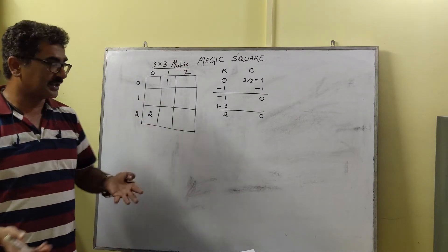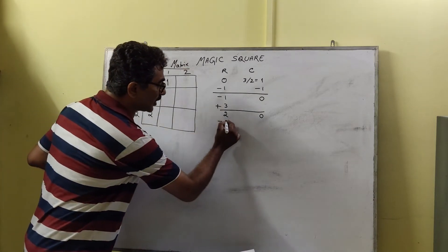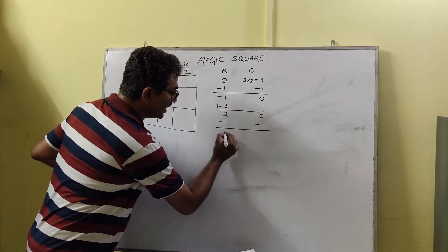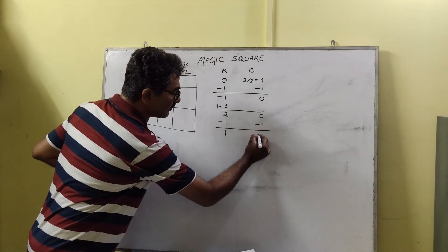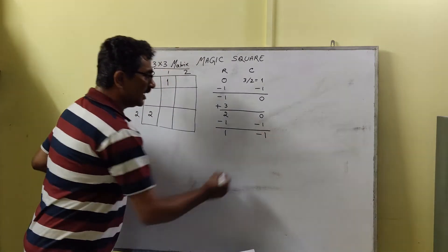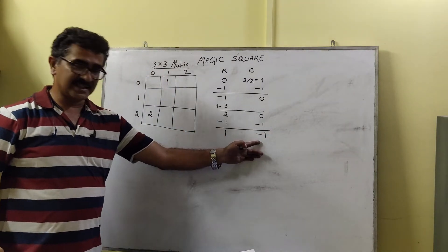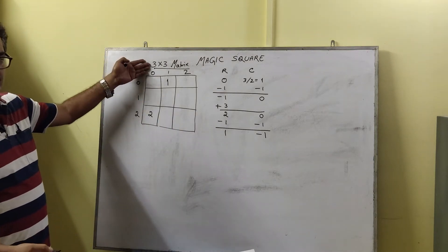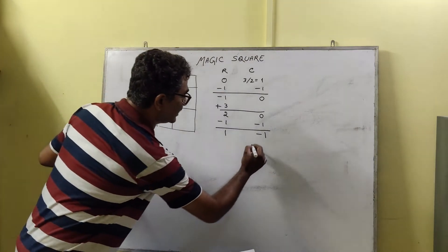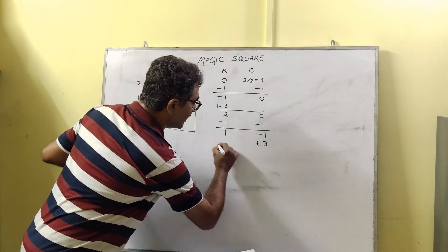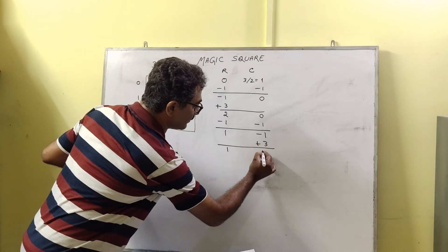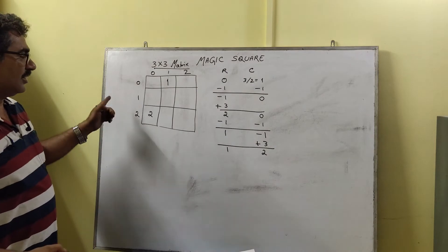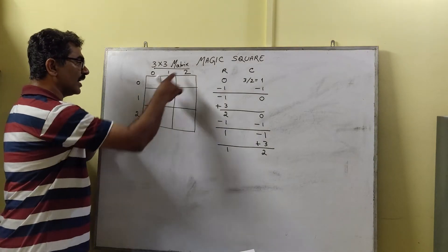Again, we subtract 1 from both row and column: row becomes 1, column becomes -1. Again we have an invalid negative index, so we add the matrix size: column becomes 2. So the next number, 3, will get inserted at row 1, column 2.